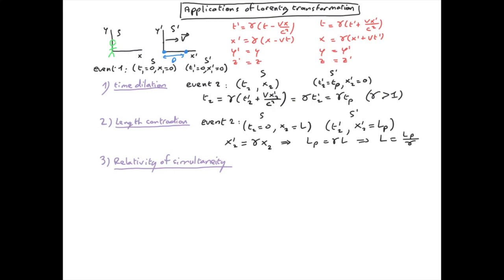This defines event 2 in the S′ frame, which occurs at T₂′ = 0 because it happens simultaneously with the first event in the S′ frame, but at distance D, so X₂′ = D.